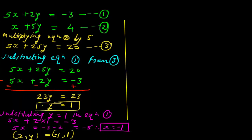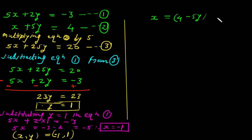Another way we can solve simultaneous equations is by the substitution method. Here, we take equation 2 and organize it in terms of x, so x equals 4 minus 5y. This becomes equation 3.